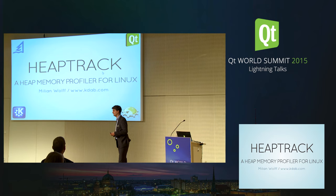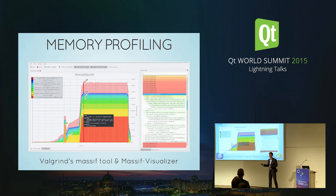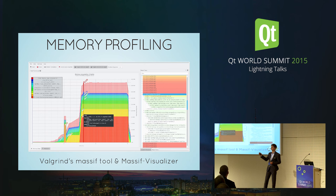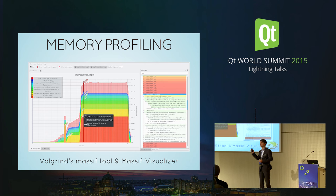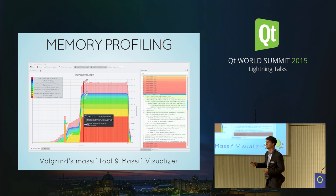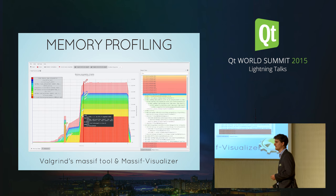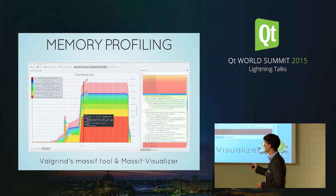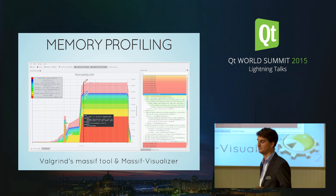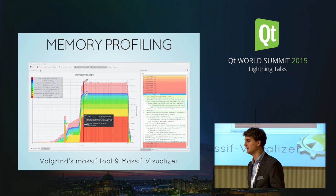Heaptrack is a heap profiler. Who of you has used Massif or even Heaptrack before for optimizing Qt applications? Please try it out — it's actually quite awesome. This tool here is Massif Visualizer, my old visualizer to look at Massif data.